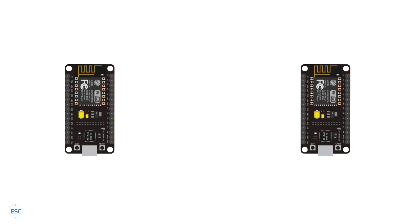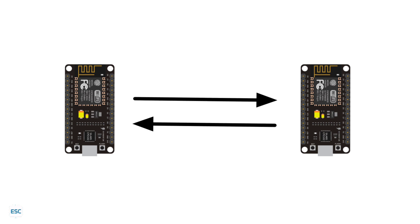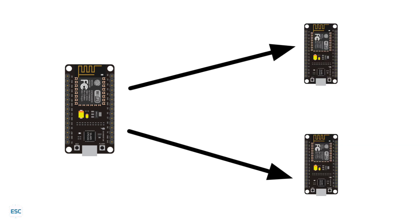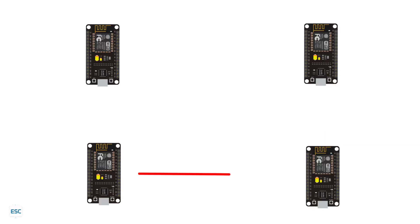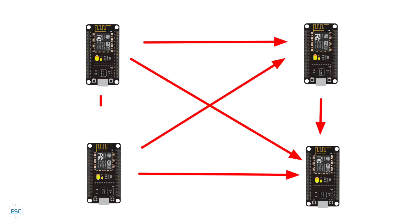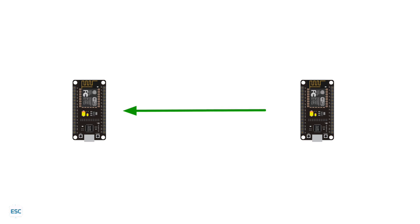ESPNow is very useful and can be used as one-way or two-way communication in different setups — we can send or receive data to single or multiple devices. We can also use it as a mesh network. To send data via ESPNow, we need to know the MAC address of the recipient, so the communication is safe and secure.